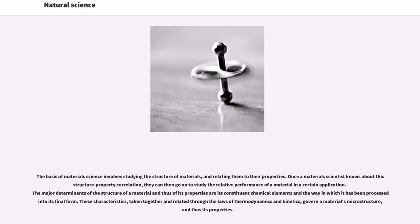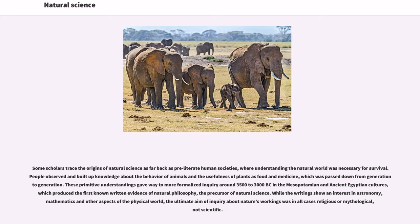Some scholars trace the origins of natural science as far back as pre-literate human societies, where understanding the natural world was necessary for survival. People observed and built up knowledge about the behavior of animals and the usefulness of plants as food and medicine, which was passed down from generation to generation. These primitive understandings gave way to more formalized inquiry around 3,500 to 3,000 BC in the Mesopotamian and ancient Egyptian cultures, which produced the first known written evidence of natural philosophy, the precursor of natural science. While the writings show an interest in astronomy, mathematics and other aspects of the physical world, the ultimate aim of inquiry about nature's workings was in all cases religious or mythological, not scientific.